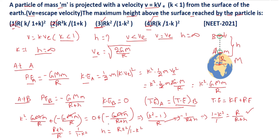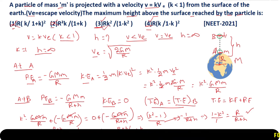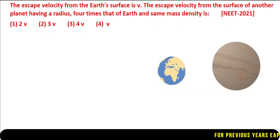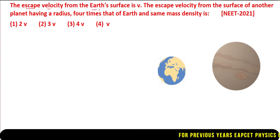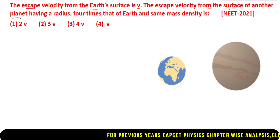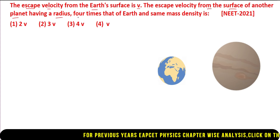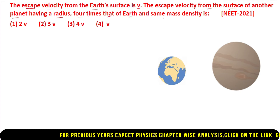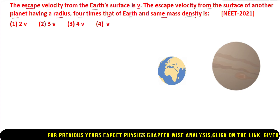So our answer for this question is the third option, that is H equal to Rk squared by (1 minus k squared). Our next question is: the escape velocity from the Earth's surface is V. The escape velocity from the surface of another planet of radius 4 times that of Earth and same mass density is?